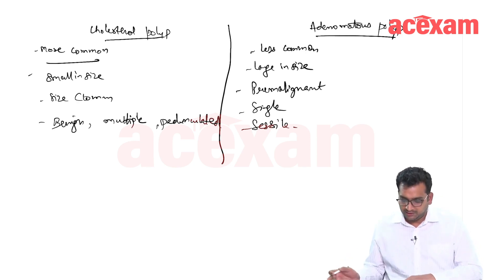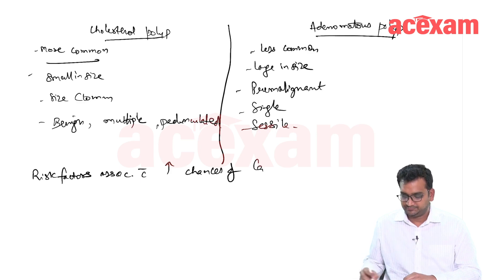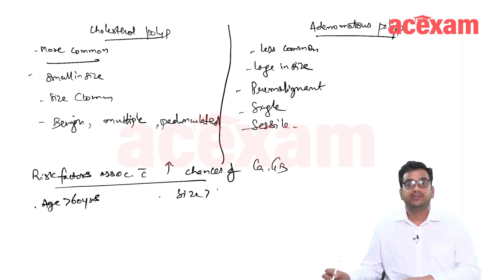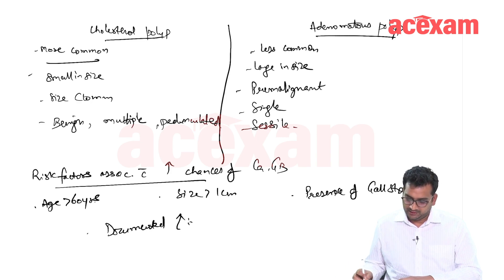What all are the risk factors associated with increased chances of carcinoma gallbladder in a GB polyp? If age is more than 60 years, if size is more than 1 cm, these are indications for cholecystectomy.